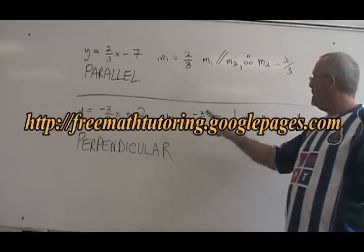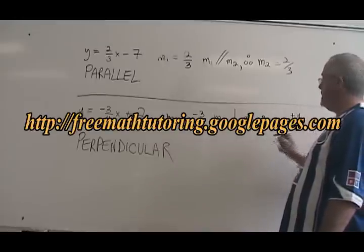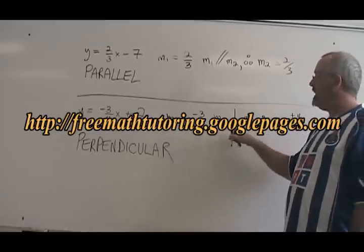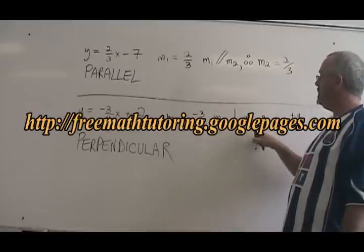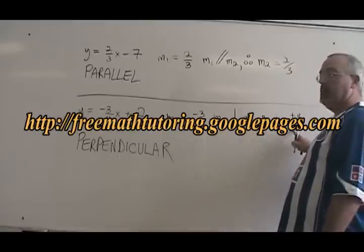Since the m1 was negative, the m2 is positive. If m1 equals negative 3 quarters and m1 is perpendicular to m2, m2 must be equal to positive 4 thirds.